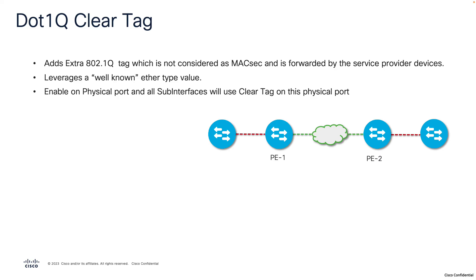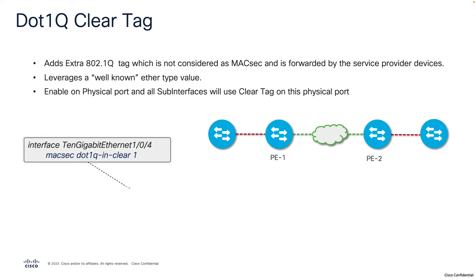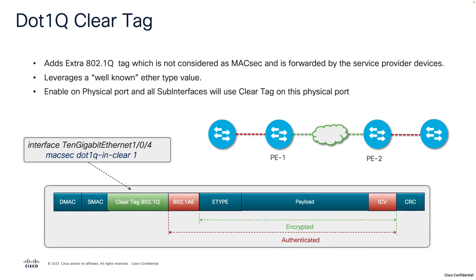Clear tag can be enabled on the physical port via CLI. Once you enable clear tag on the physical port, all sub-interfaces under that physical port will use clear tag.